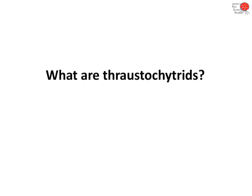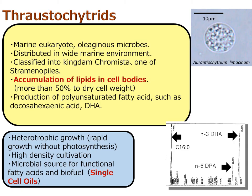Let me briefly review thraustochytrids. They are marine eukaryotic microbes, sometimes called oleaginous microbes — 'oleo' meaning lipid — because they can produce oils within their cell bodies. In their natural environment they are widely distributed in marine environments including estuaries, and they can be classified into the kingdom Chromista, within the stramenopiles. Their most unique beneficial characteristic is that they can accumulate large amounts of lipids in their cell bodies.